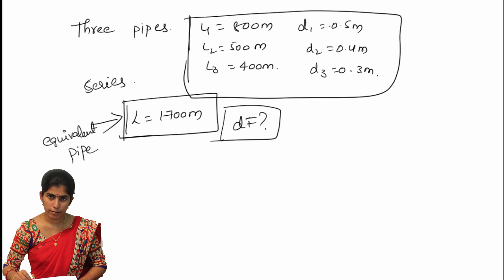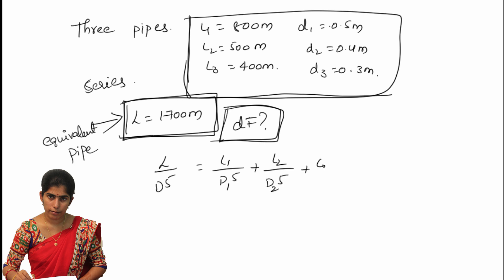For the compound pipe they have given different lengths and different diameters. For the equivalent pipe they have given only the length and ask us to find the diameter. We can find this using the Dupuit equation: L divided by D to the power 5 equals L1 over D1 to the power 5, plus L2 over D2 to the power 5, plus L3 over D3 to the power 5.